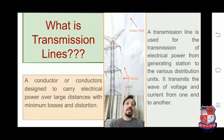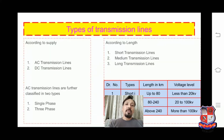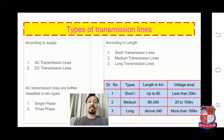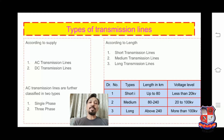What are the types of transmission line? According to the supply, transmission lines are classified into two categories. The first one is AC transmission line and the second one is DC transmission line. AC transmission lines are further classified into two categories: single-phase transmission line and three-phase transmission line.